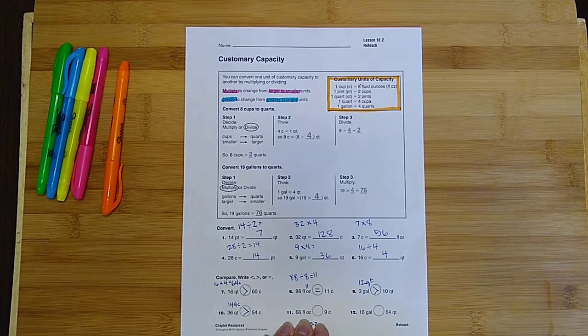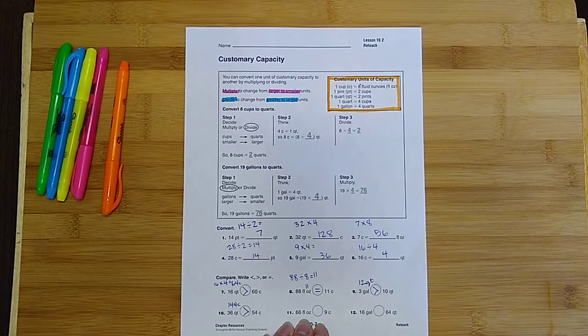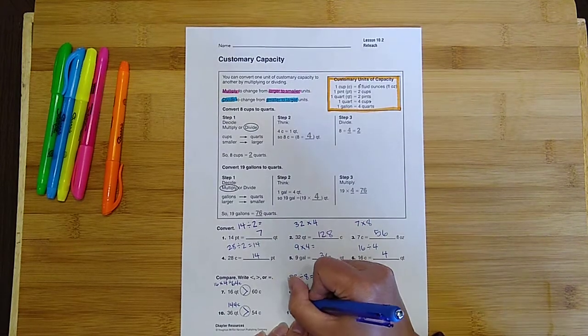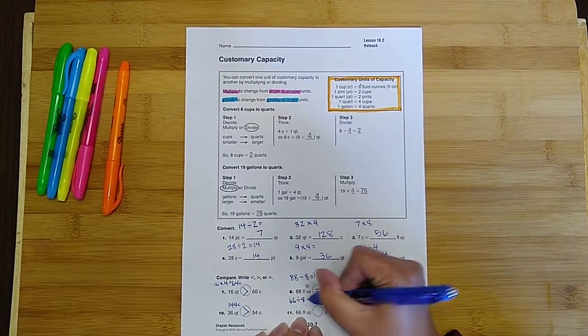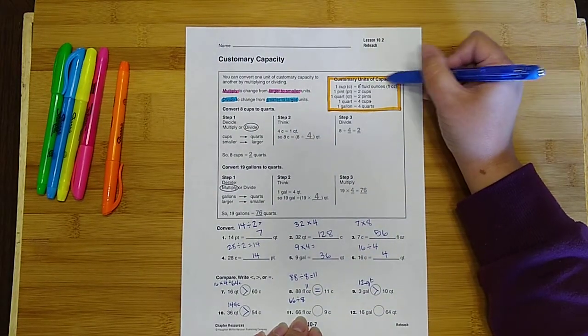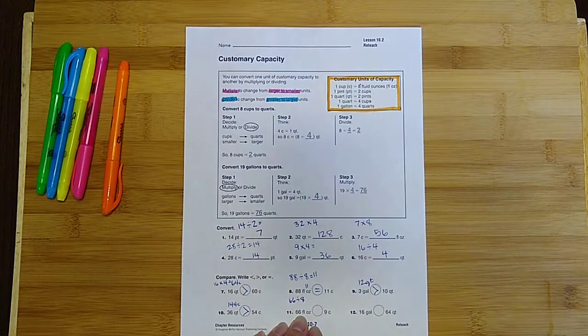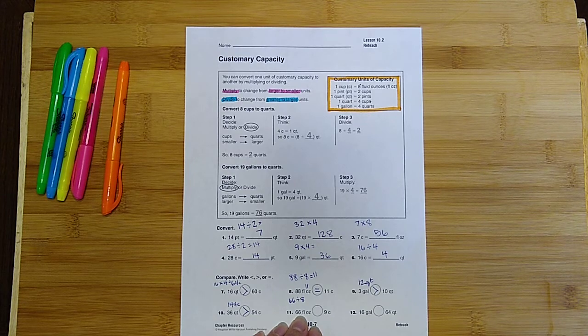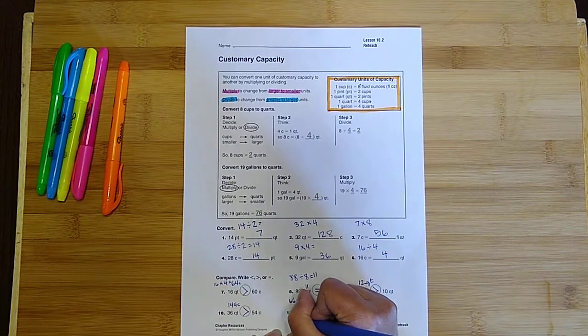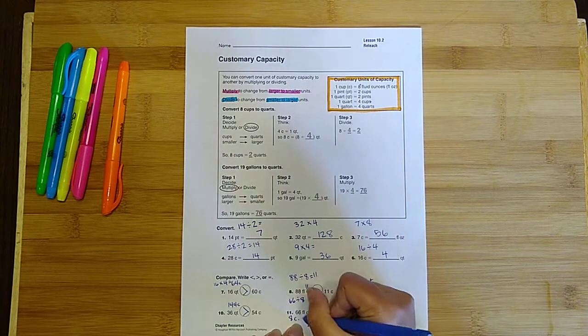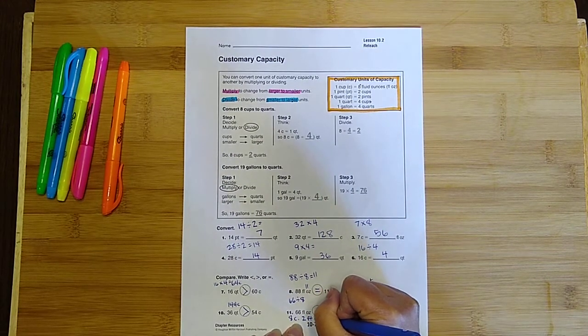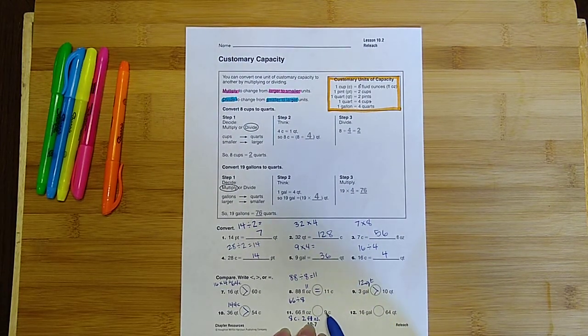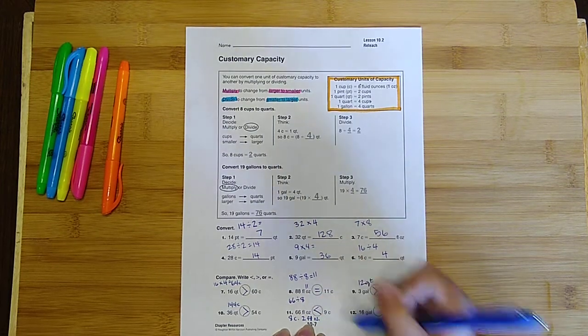On number 11, we start with 66 fluid ounces, and I divide it because ounces are smaller than cups. So I would go 66 divided by 8, since there's 8 ounces in every cup. Again, you find that information up here. So 66 divided by 8. What I ended up getting, because it doesn't just evenly divide, there is a remainder. So I got, I'll write it down here, 8 cups and 2 fluid ounces. Okay, so 8 cups and 2 fluid ounces. Well, 9 cups is still going to be bigger, so I'm going to put the less than symbol here.